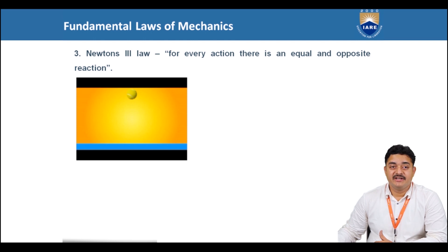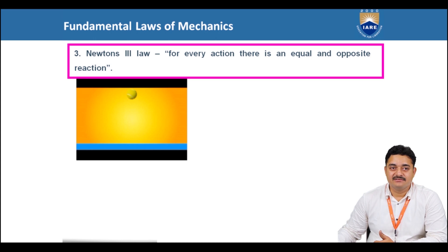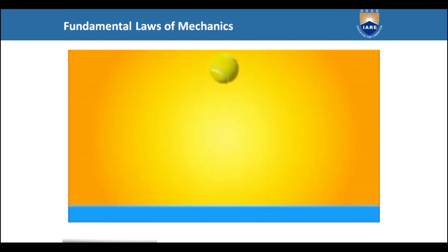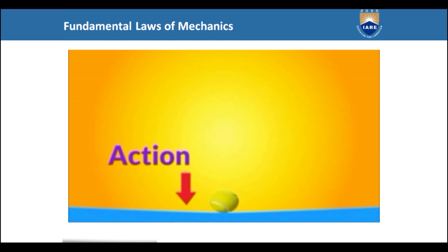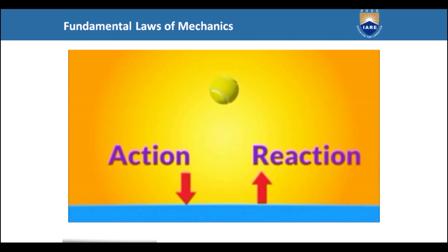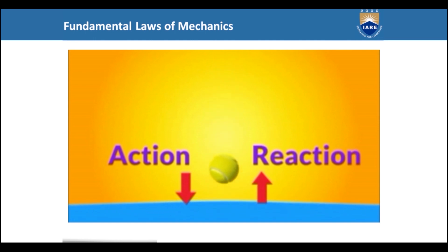Newton's third law states that for every action there is an equal and opposite reaction. Let us see a small animation for understanding this. Consider a tennis ball falling from a certain height. When the ball hits the ground, it exerts a force on the ground, which is called the action. The response of the ground will also be in the form of a force acted on the ball in the reverse direction, which is called the reaction. The reaction force will be equal in magnitude to the action force and act along the same line.